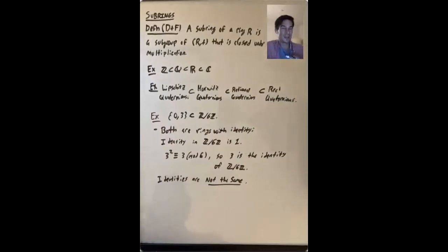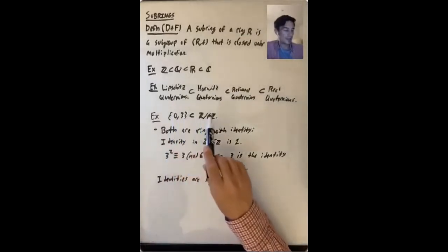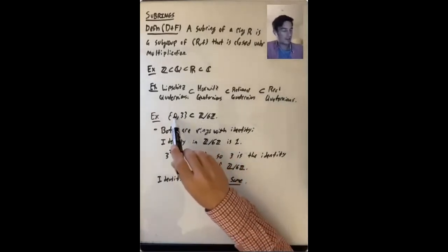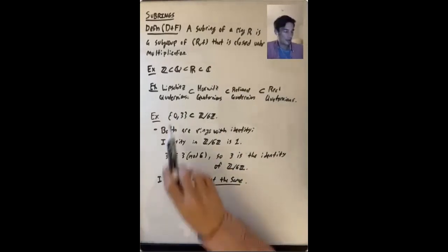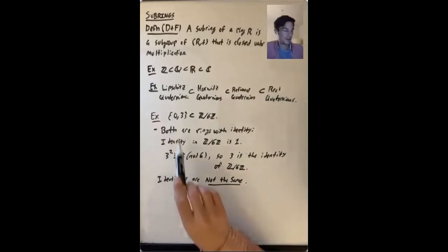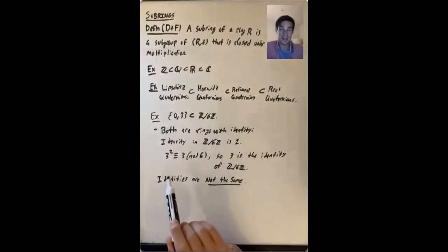And here is an example that's a little bit weirder. Let's take the subset {0, 3} inside of Z mod 6Z. Z mod 6Z is a ring. {0, 3} is a subgroup, and it's closed under multiplication because 0 times 3, 0 times 0 are both 0, and 3 times 3 mod 6 is 3. So this is a subgroup of Z mod 6Z plus that is closed under multiplication, so it's a subring.